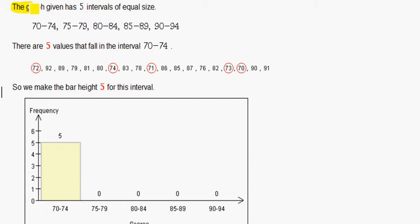We can see that the graph given has 5 intervals of equal size. There's 70 to 74, which is here, 75 to 79, which is here, 80 to 84, 85 to 89, and 90 to 94.